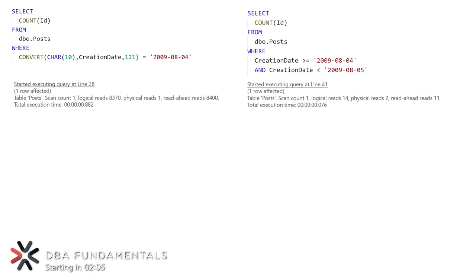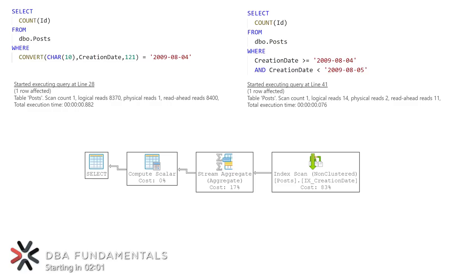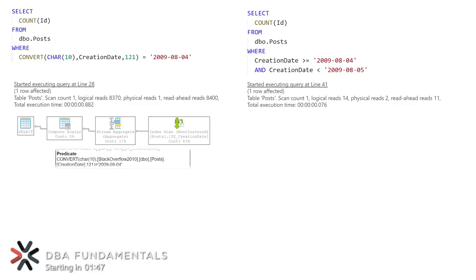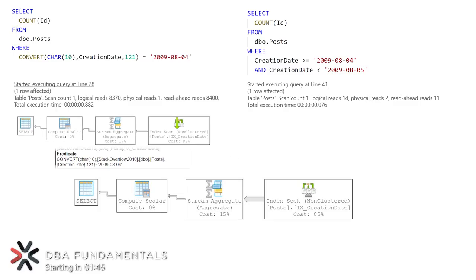If we check the execution plan, we'll see why this happens. Our first query scans our index which contains almost 4 million rows. For each one of those rows, it needs to compute our conversion to a char 10 date string representation and then do its comparison. Our second query, on the other hand, is able to seek directly to the rows that fall in between that date range of between the 4th and the 5th.